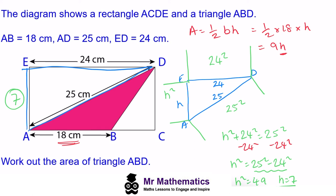Now we can put this back into our formula for a triangle, where we have 9 multiplied by 7. So the red area will be 63 centimeters squared. Thank you for watching, and I hope you found that useful. You can download the full lesson at mrmathematics.com.